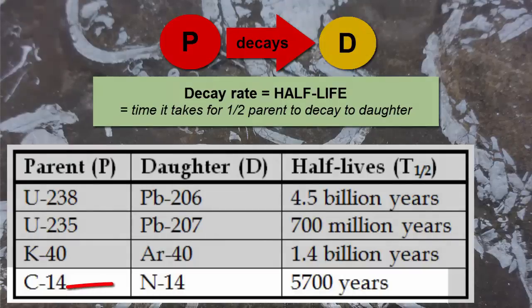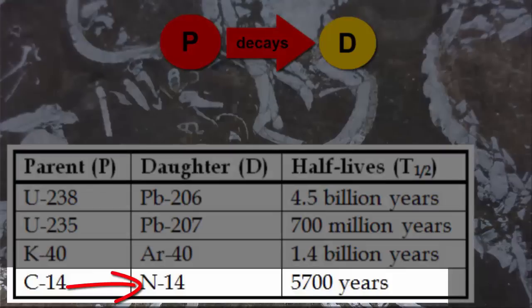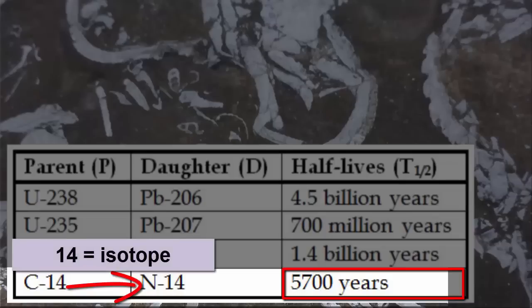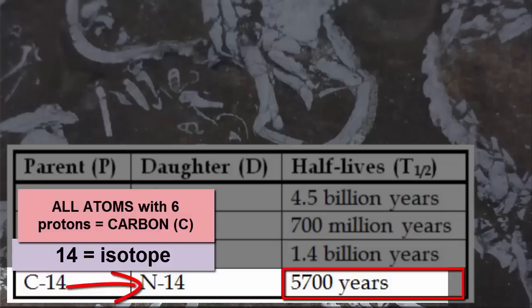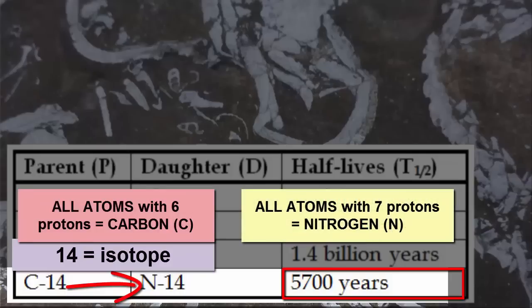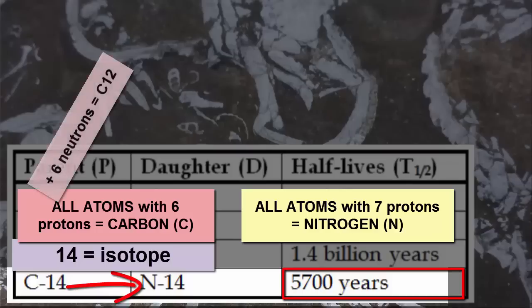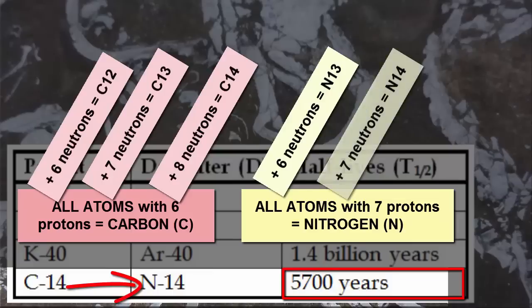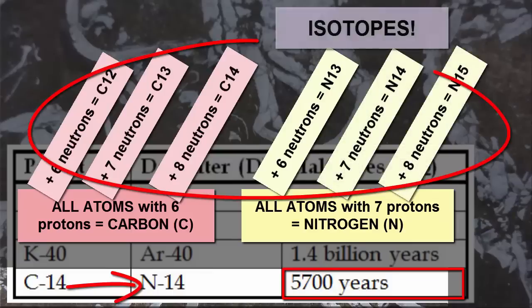For example, carbon-14 decays to nitrogen-14 with a half-life of 5,700 years. The number 14 indicates a particular isotope of these atoms. All atoms with 6 protons are carbon atoms; all nitrogen atoms have 7 protons. However, each atom can have varying amounts of neutrons, and we call all those permutations — the same atom but different numbers of neutrons — isotopes.